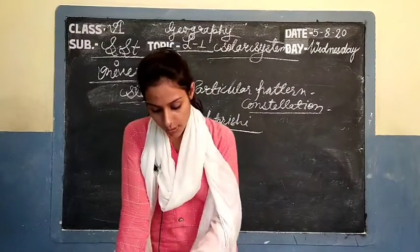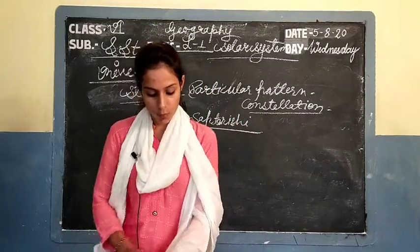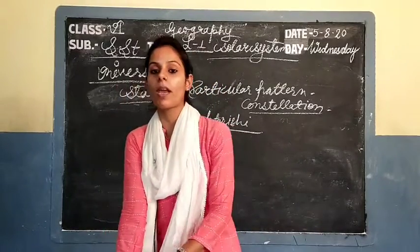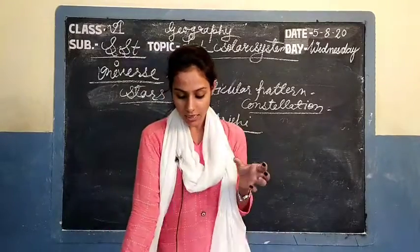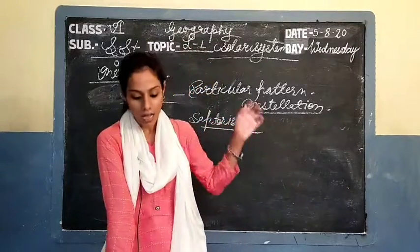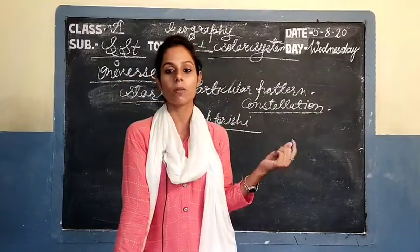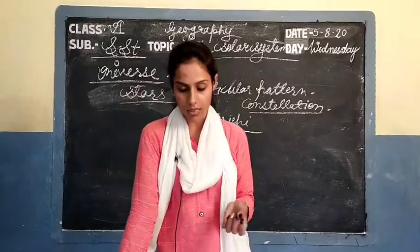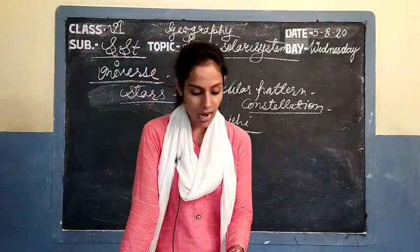The first two stars of Saptarishi always point to the pole star, which continually shines on the north pole. Saptarishi ke jo pehle do stars hain, woh pole star hote hain jo hamesha north direction mein hi hote hain. Unhe dekhkar hame north side ka pata chal jata hai. Like the Saptarishi, there are many other constellations in the sky.